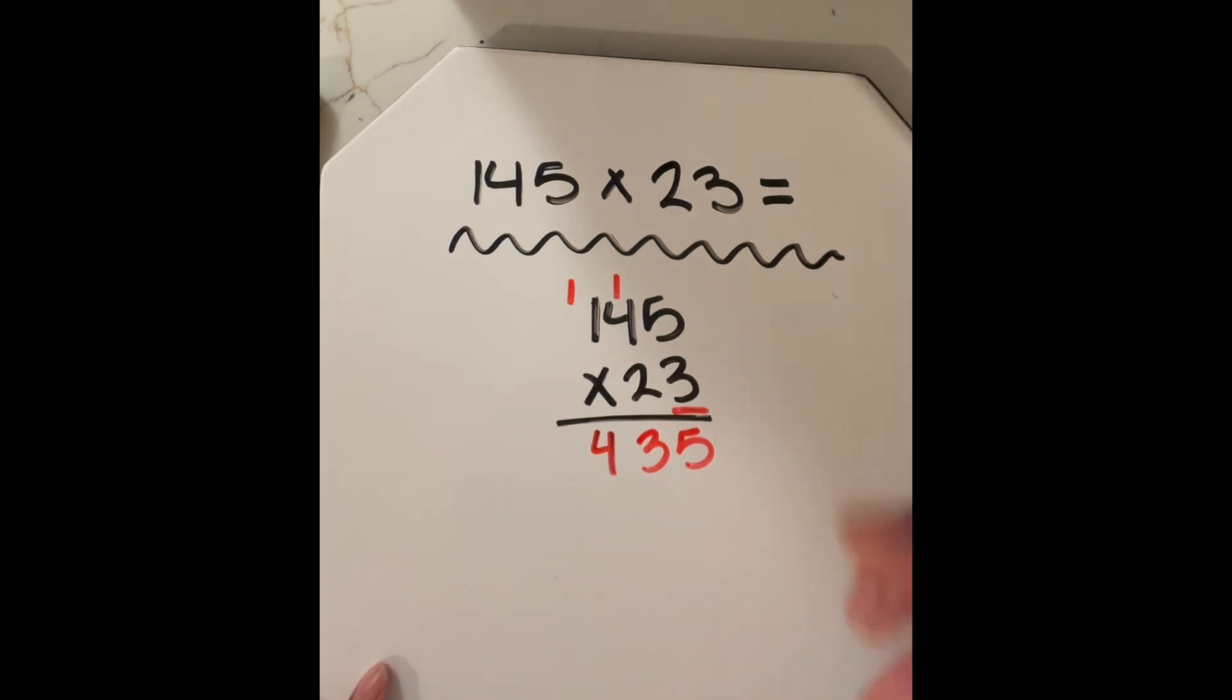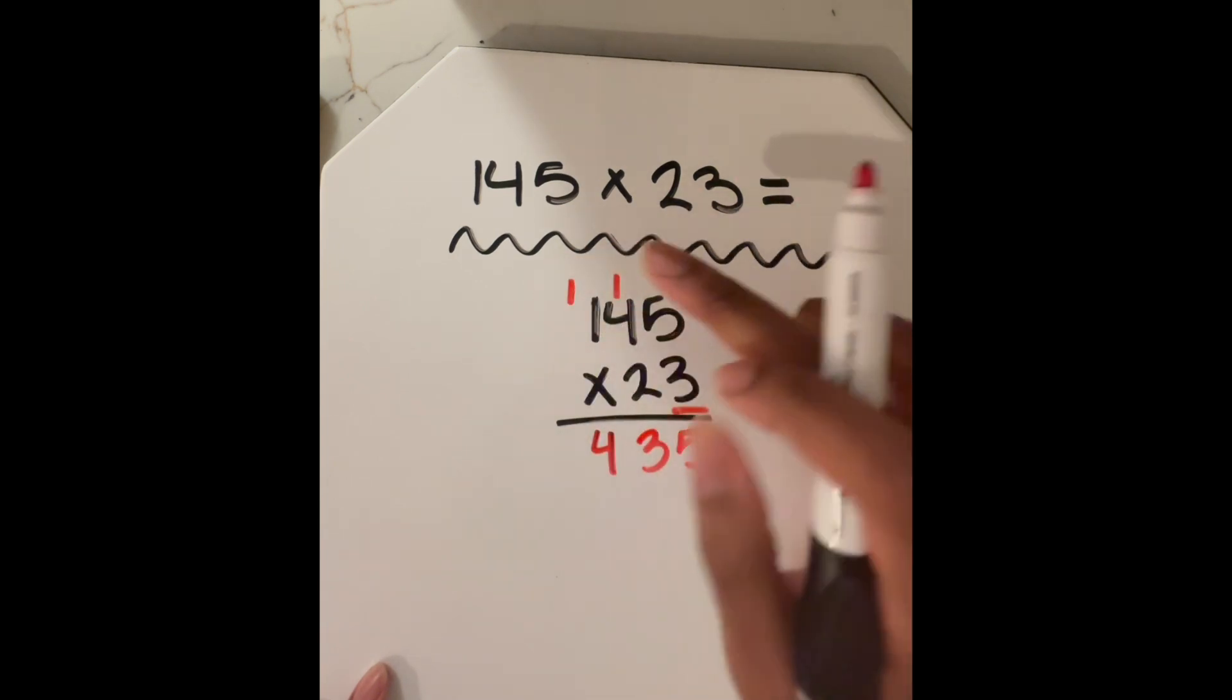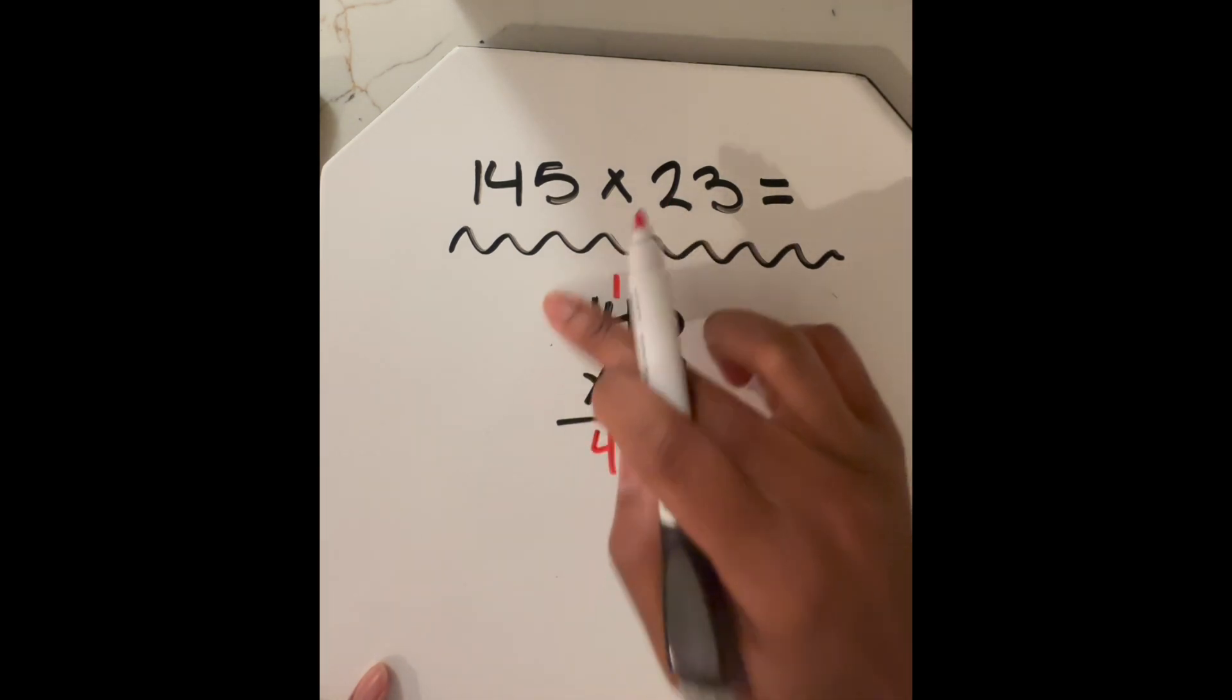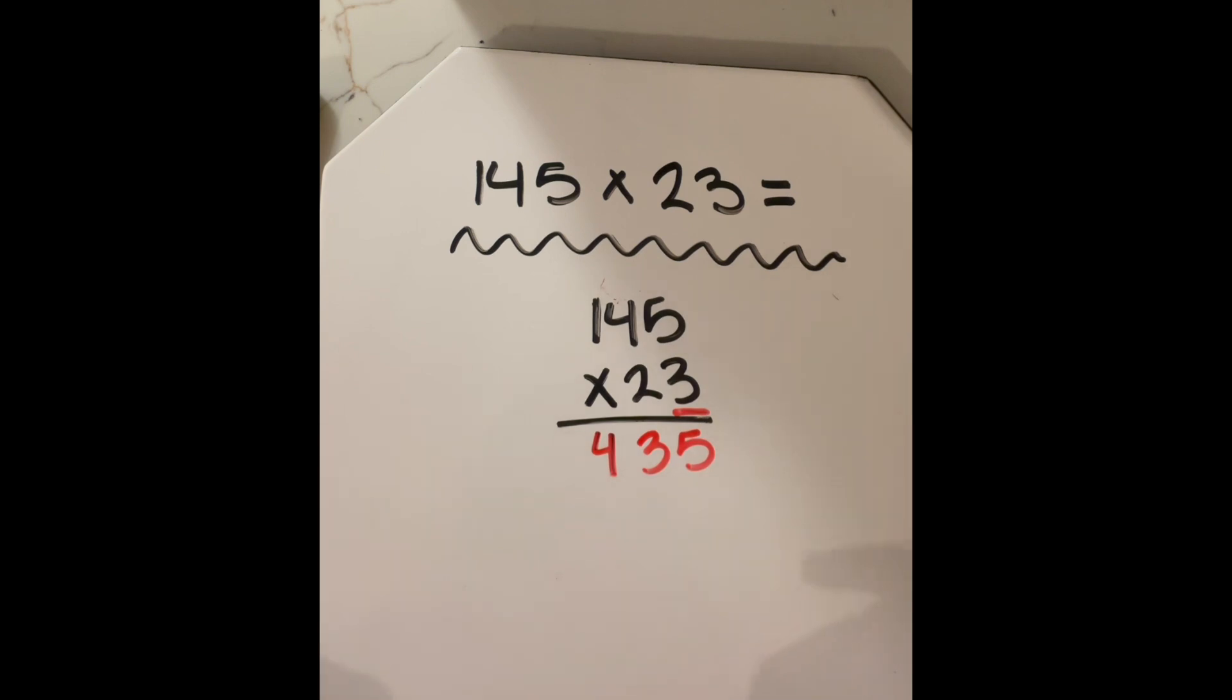Before we move on, it's really important to either cross out these digits above here in red or just completely erase them altogether. For me, I'm going to erase them. Also going to erase this. No, I'll leave that. All right.